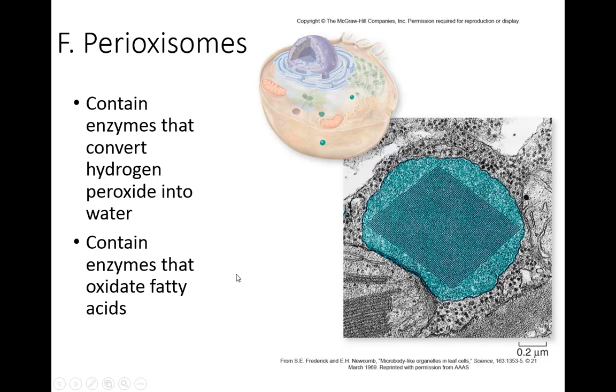Peroxisomes are similar. They are also formed by the Golgi apparatus. And they have a specialized function. Some of them contain enzymes that convert hydrogen peroxide into water. Hydrogen peroxide is a byproduct of the mitochondria making energy. But it is harmful to parts of the cell, so it needs to be controlled. Others contain enzymes that oxidize fatty acids.